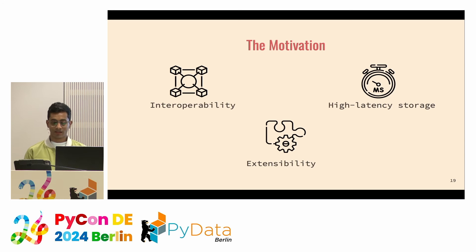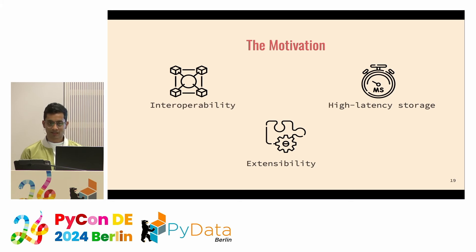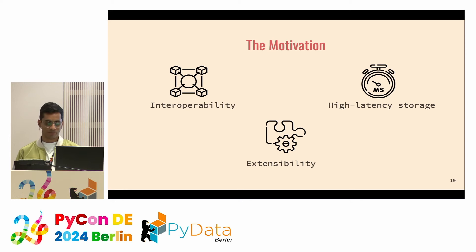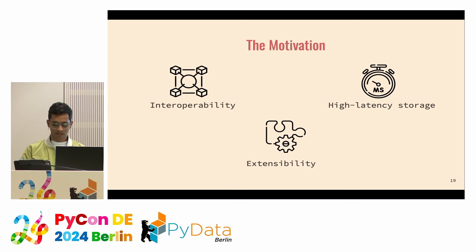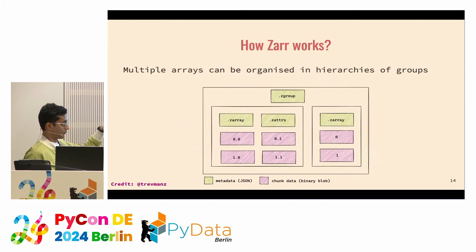Then there was high latency storage. The v2 specification was developed with local file storage in mind, but there are operations with high latency when dealing with cloud object storage like Amazon S3, Google Cloud, or Azure. This was addressed by reducing high-latency per-operation time by consolidating the metadata into a single document — whereas earlier there were multiple JSON documents, now they are consolidated into one.